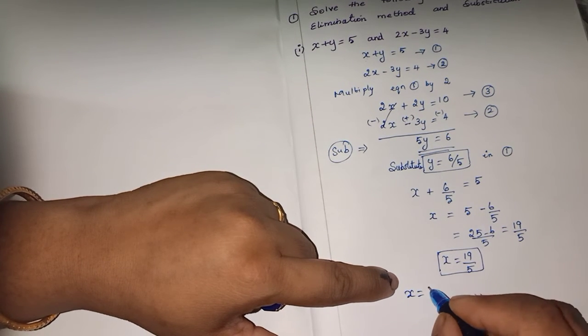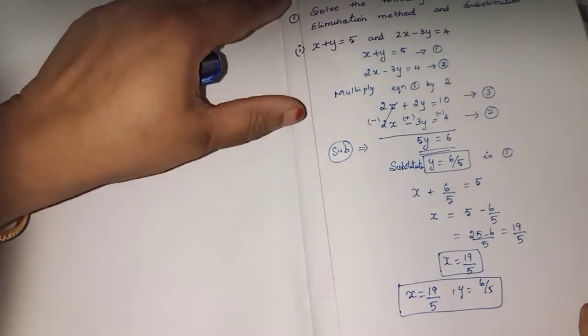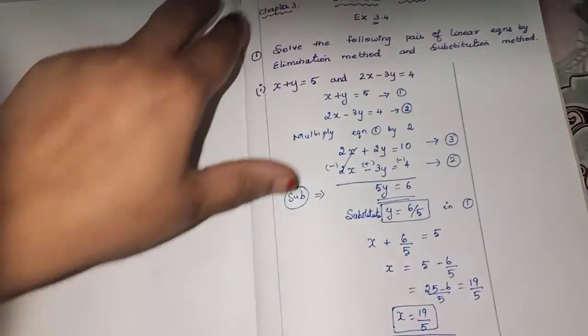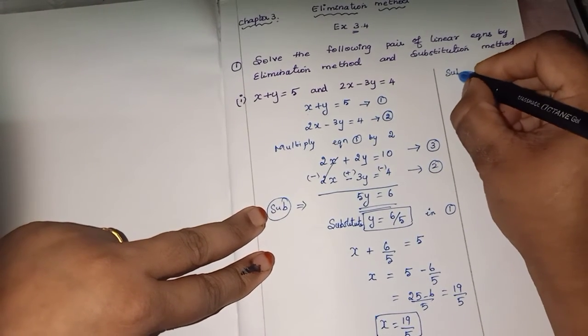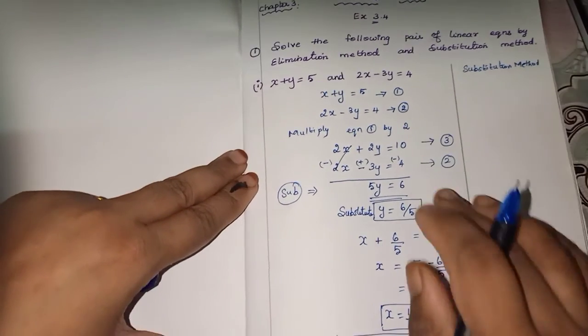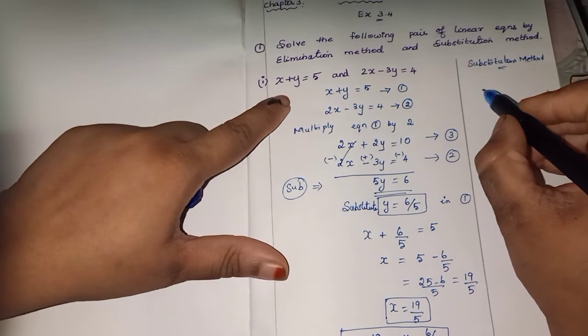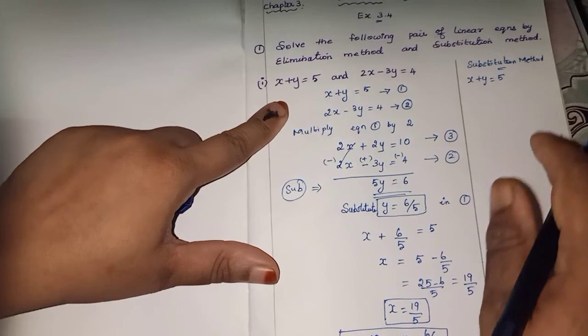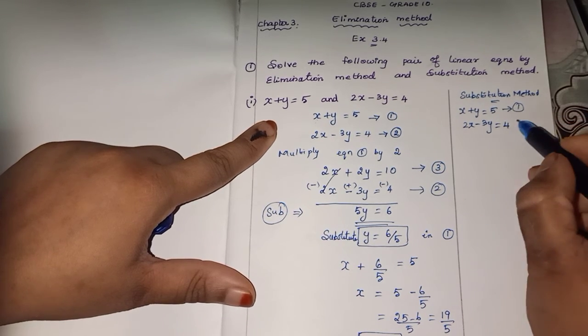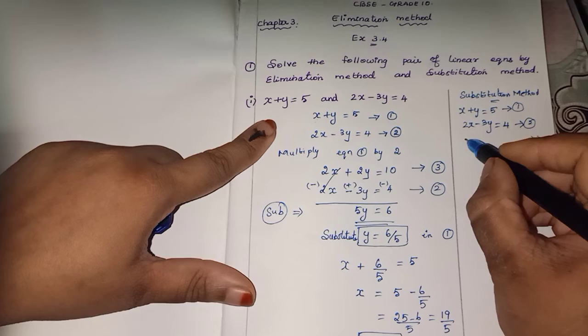Now substitution method. I am going to do substitution method here. Already you know substitution method: substitute the value. In elimination we eliminate variables. Substitution method: first equation is x plus y equals 5, second equation is 2x minus 3y equals 4. You can now substitute any value. It is easy equation. The coefficient is 1 for x. So from equation 1, how will you write?